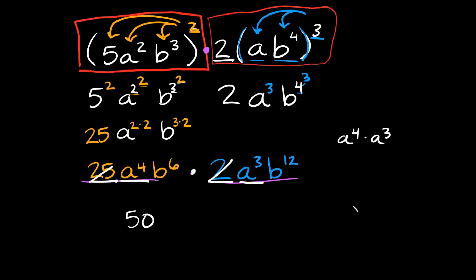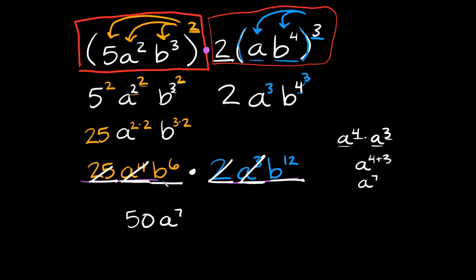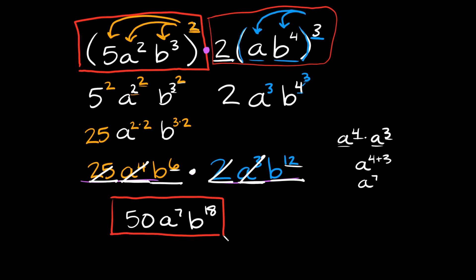How do you simplify a to the fourth times a to the third? Whenever you're multiplying exponents with the same base, you keep the base and add the exponents together. So we do 4 plus 3, giving us a to the seventh. Then lastly we have b to the sixth times b to the twelfth. Again, add the exponents: 6 plus 12 equals 18. So your final answer is 50 a to the seventh b to the 18th.